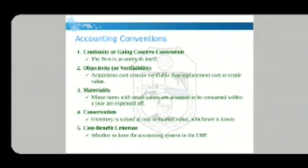The second convention is objectivity or verifiability. Acquisition cost is more verifiable than replacement cost or resale cost. Whenever we are doing accounting, we consider the acquisition cost of any product or service — not the resale cost — because the resale cost is uncertain and the amount can change. To get exact results, we consider the acquisition cost.